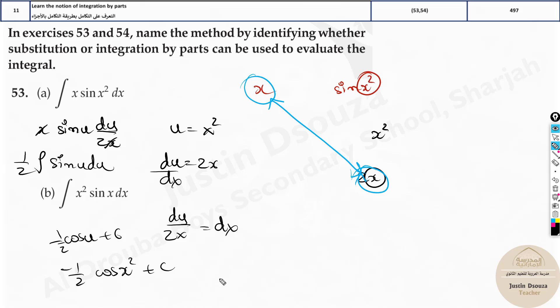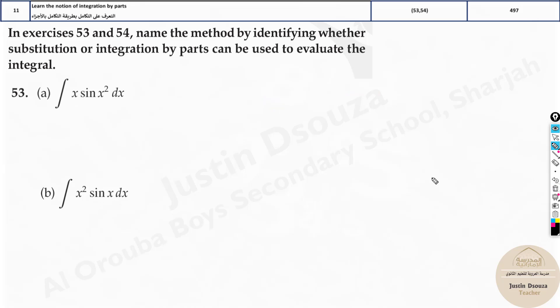But in this problem, we are not solving for this answer. We are just telling which substitution method you are using. So this one was u substitution, not integration by parts. Whereas look at this problem, second one.